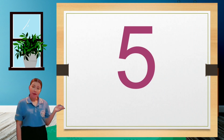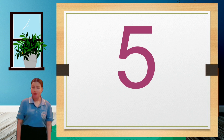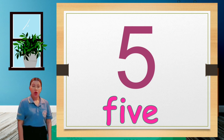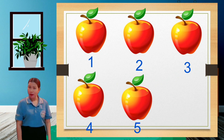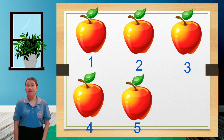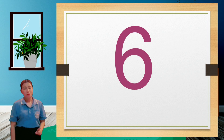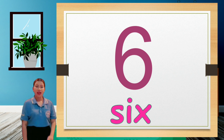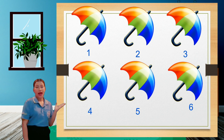One, two, three, four — there are four squirrels. Next to number four is number five. Let's spell F-I-V-E — five. Let's count the apples: one, two, three, four, five — there are five apples. Next to number five is number six. Let's spell S-I-X — six. Let's count the umbrellas: one, two, three, four, five, six — there are six umbrellas.